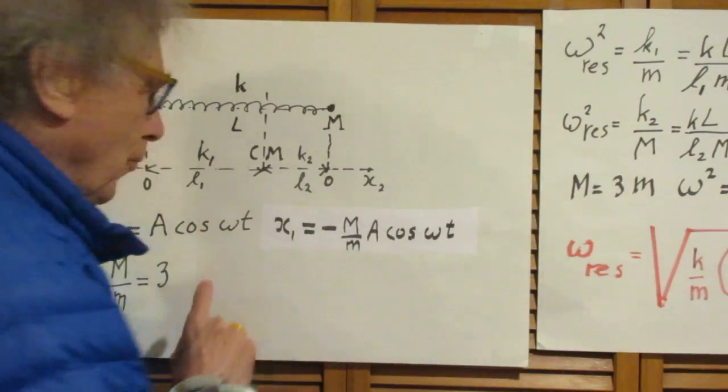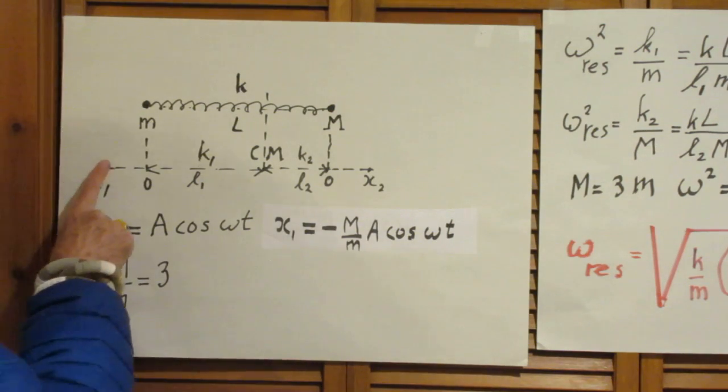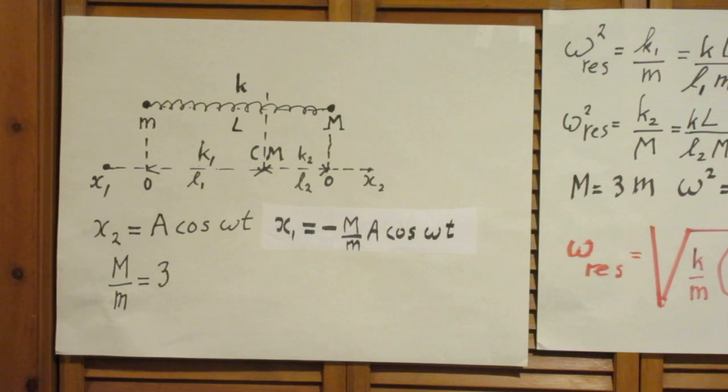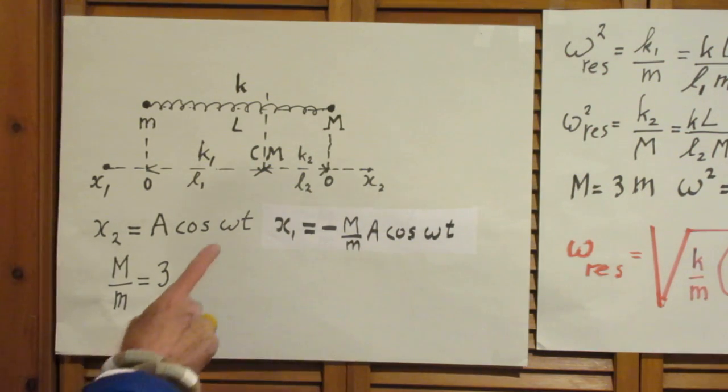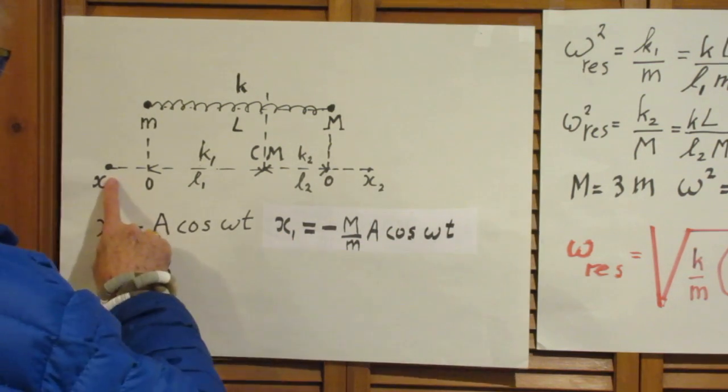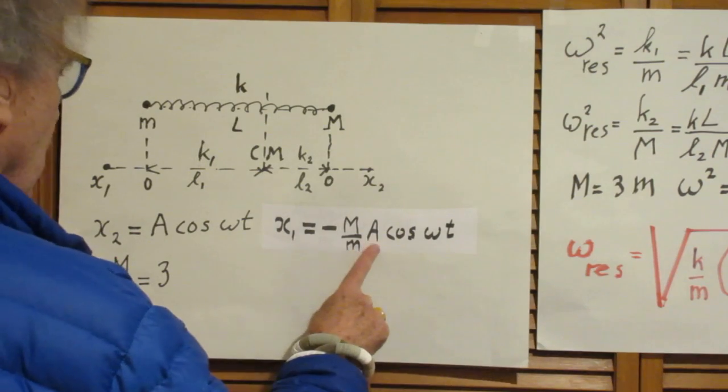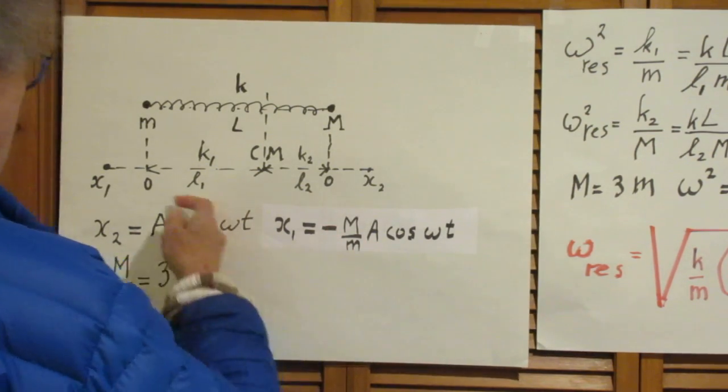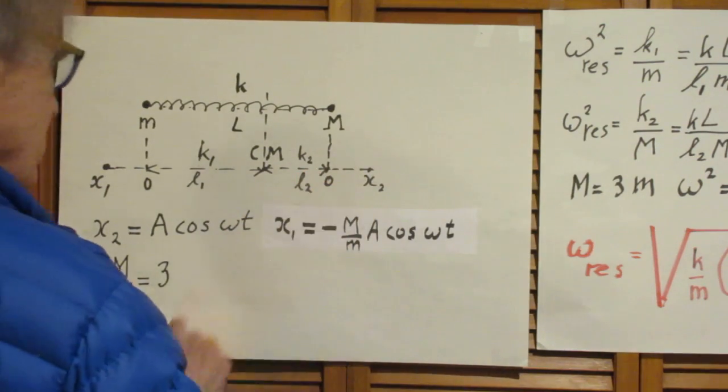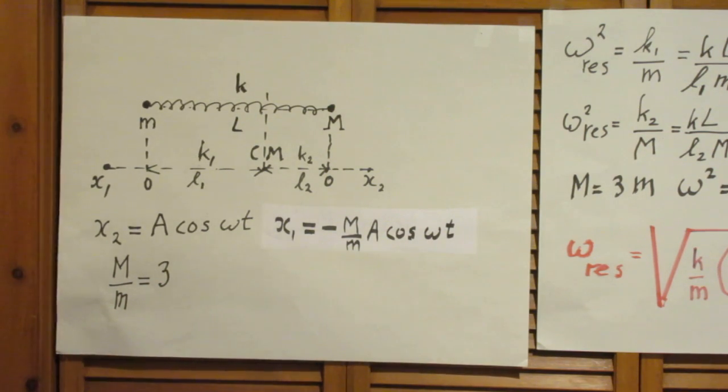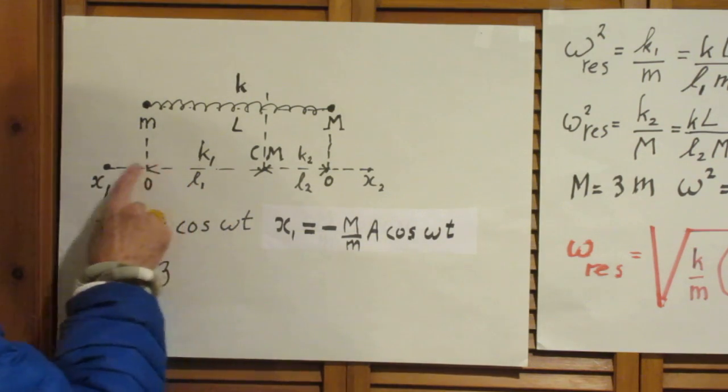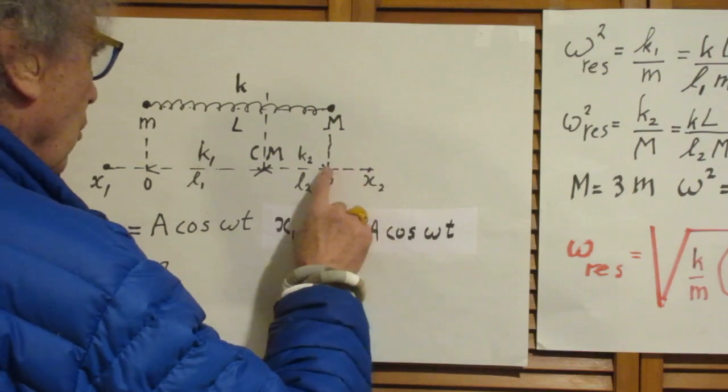Now, what is essential, of course, that X1 amplitude cannot be anything at random. Because they must stop at the same moment in time and they must go through equilibrium at the same moment in time. And so, it follows immediately then that X1 is capital M over little m times larger than capital A. And, of course, a minus sign because I call this minus and I call this plus. So, in the case that capital M over lowercase m is 3, it would mean that the amplitude of this motion would be three times larger than the amplitude of this motion.